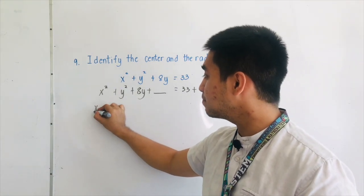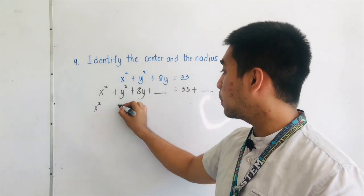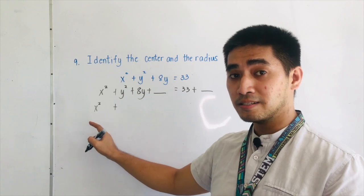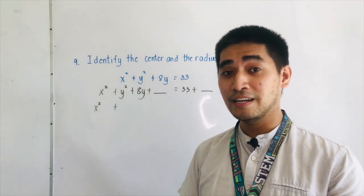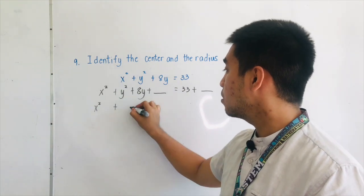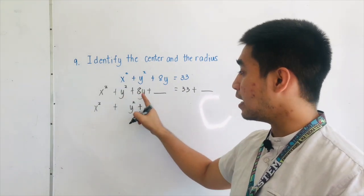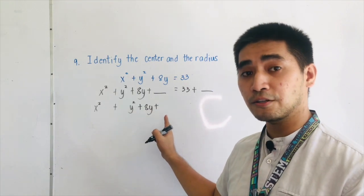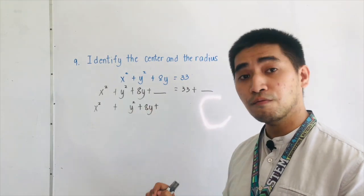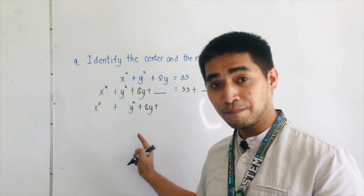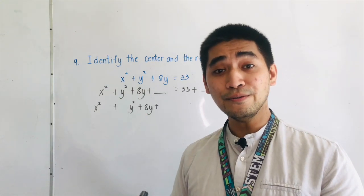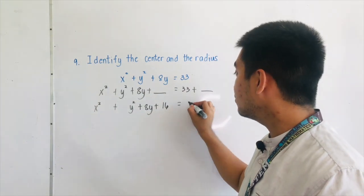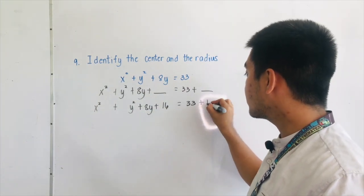Since there is no other term involving x, we will not be having coordinates of the center on the x-axis. Plus y squared plus 8y plus — what is this term? The formula gives us 8 over 2, which is equal to 4. 4 squared is equal to 16. So this is 16, giving us 33 plus 16.